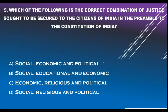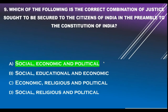Question number 9. Which of the following is the correct combination of justice sought to be secured to the citizens of India in the Preamble to the Constitution of India? Option A - Social, Economic and Political. Option B - Social, Educational and Economic. Option C - Economic, Religious and Political. Option D - Social, Religious and Political. Correct answer is Option A: Social, Economic and Political.